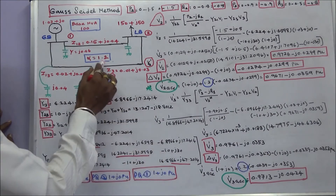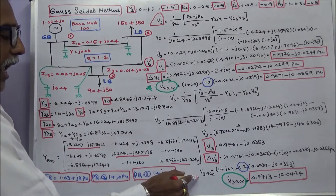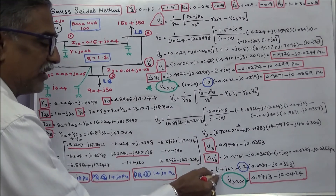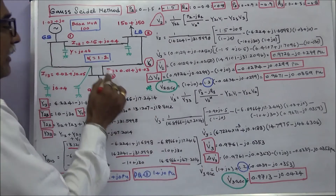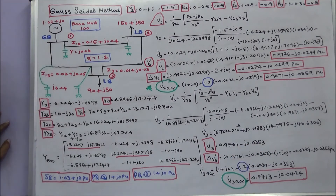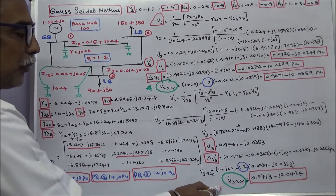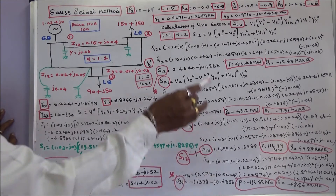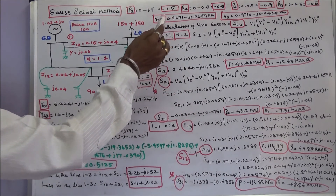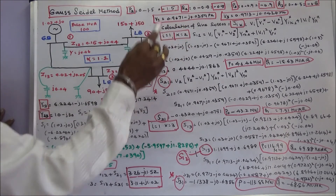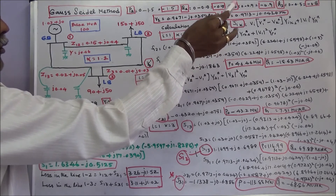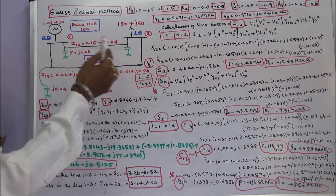Again we apply the acceleration factor alpha. The first iteration V3 accelerated value is the assumed value (1 + j0) plus 1.2 times the difference, giving V3 accelerated = 0.9713 minus j0.0424 per unit. So after the first iteration: V2 = 0.9671 minus j0.0359 and V3 = 0.9713 minus j0.0424 per unit. Next we calculate the line losses.